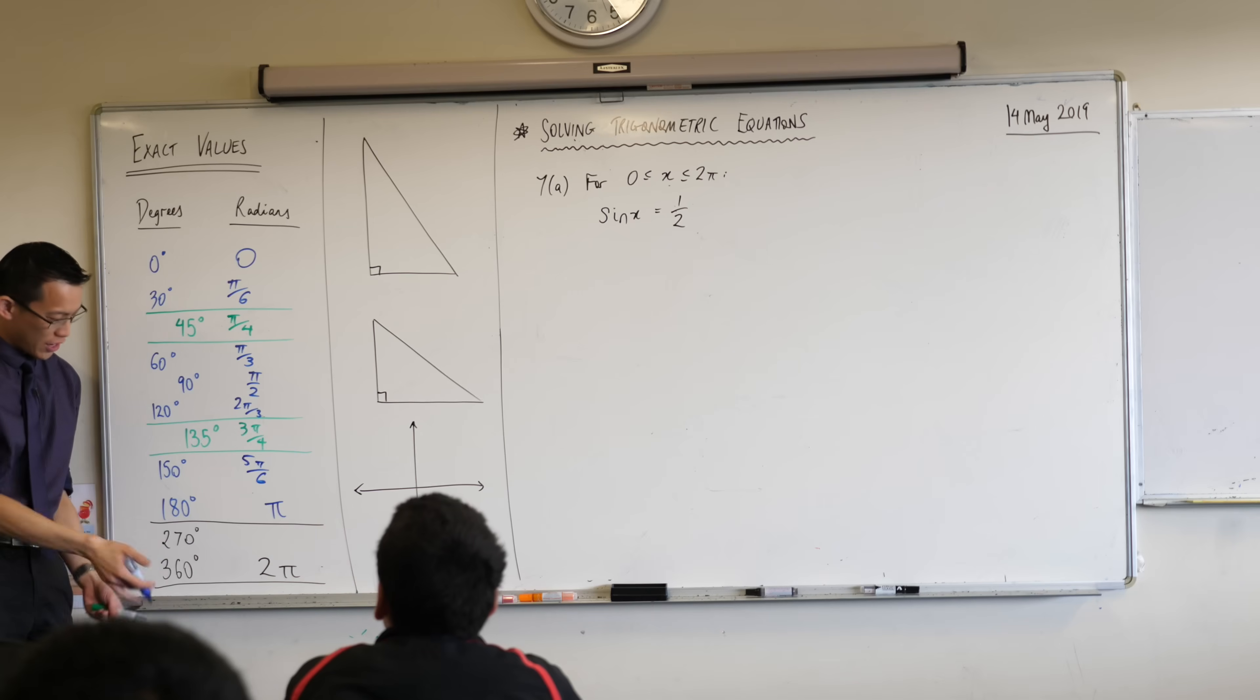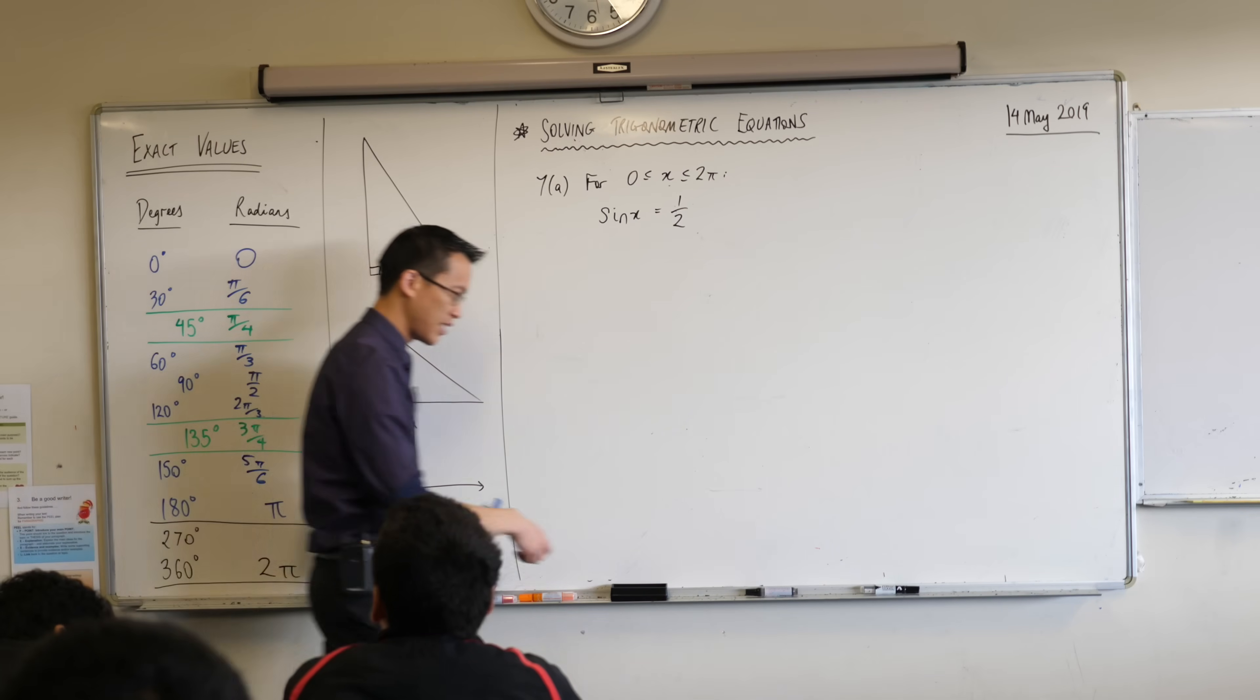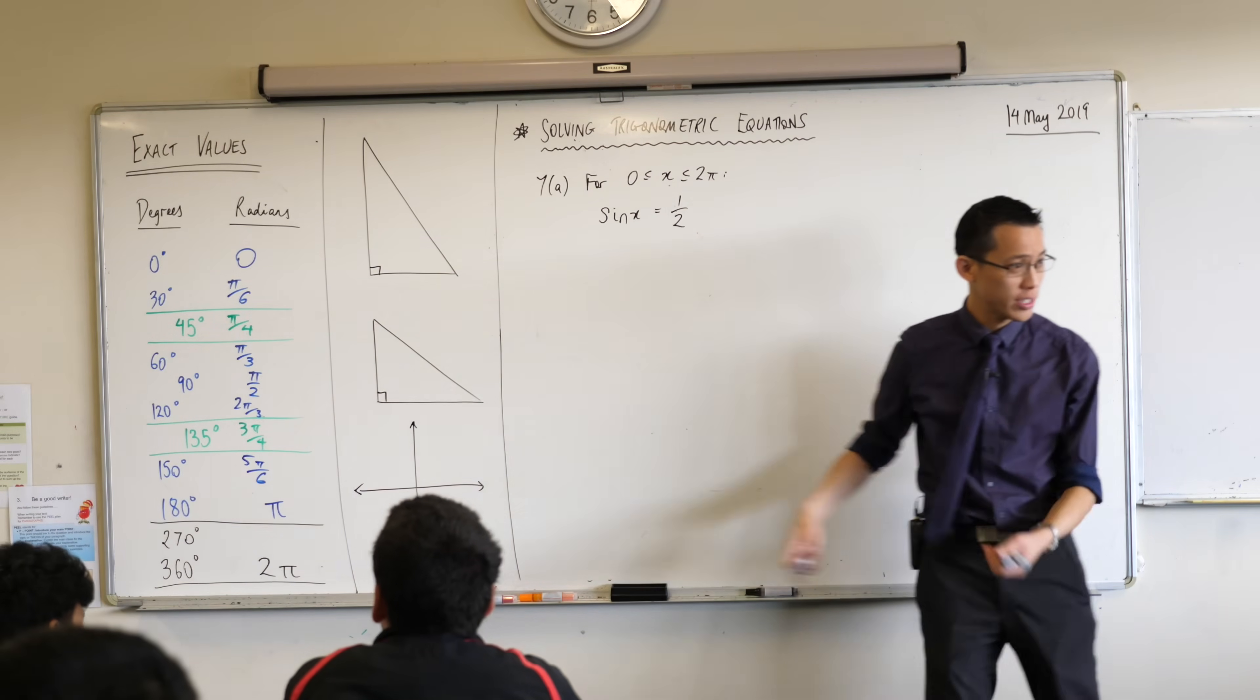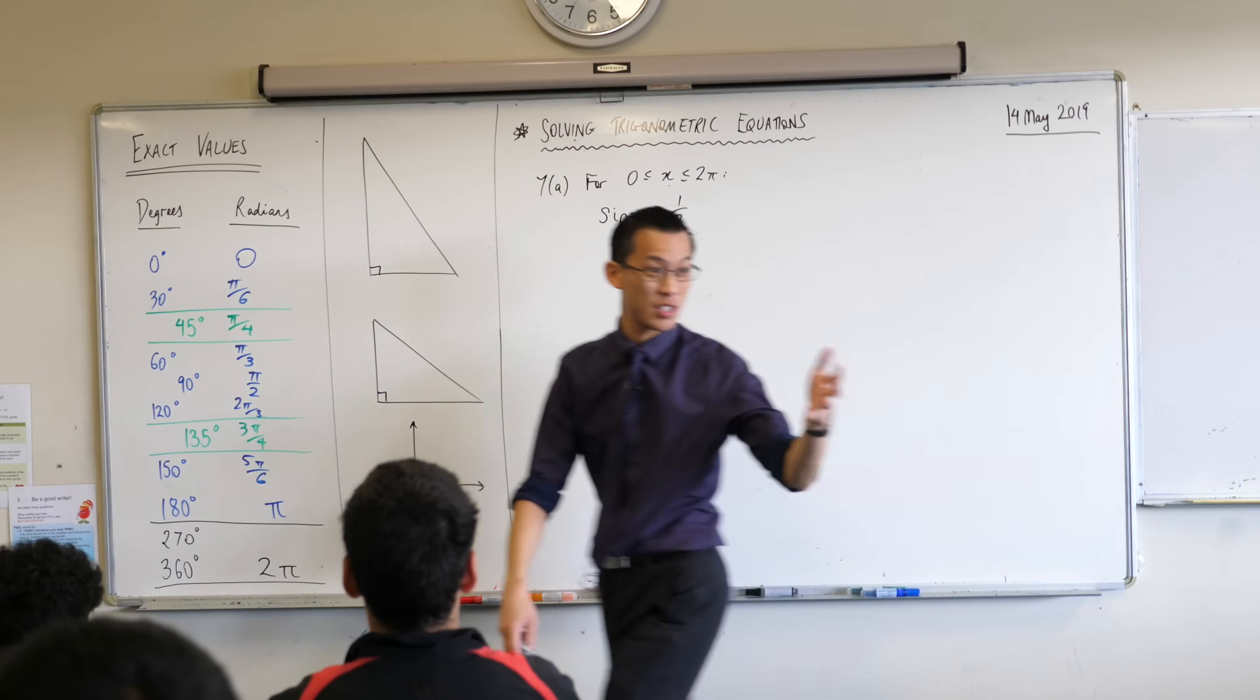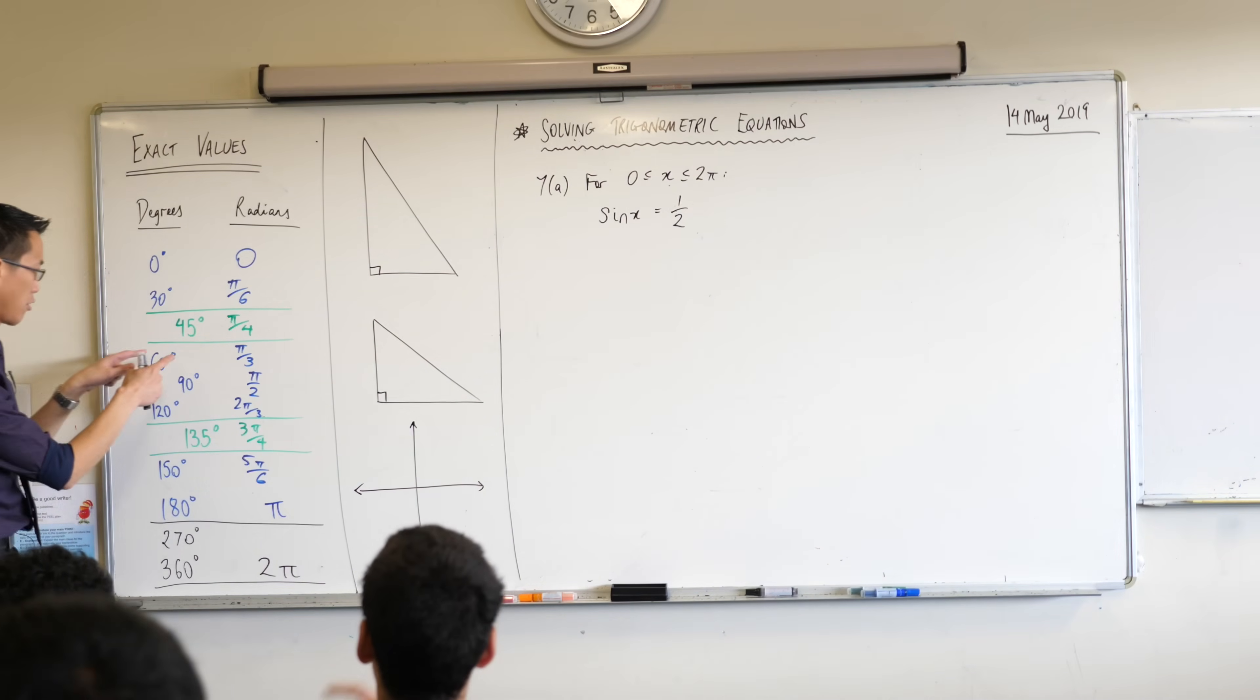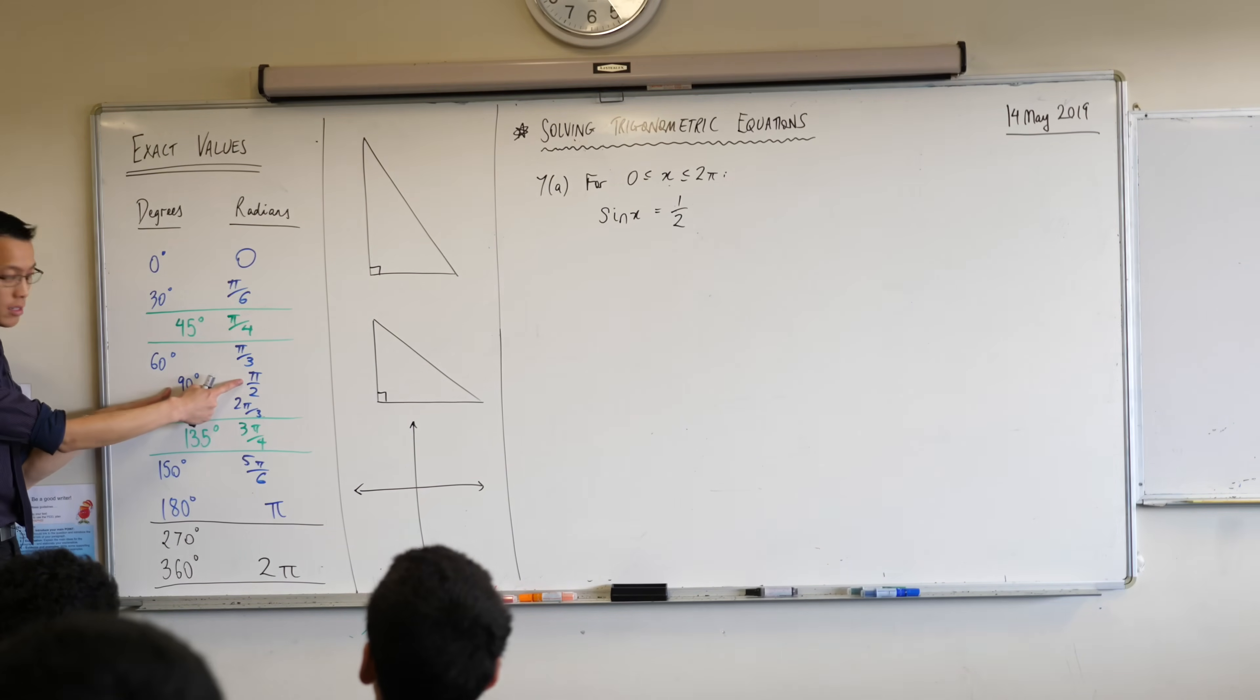And then my last one that I've got in this sort of canonical list, 270 degrees. What would you say that's in terms of 270? It's three lots of 90. We already established that 90 is that. So it's three of these, 3π/2.